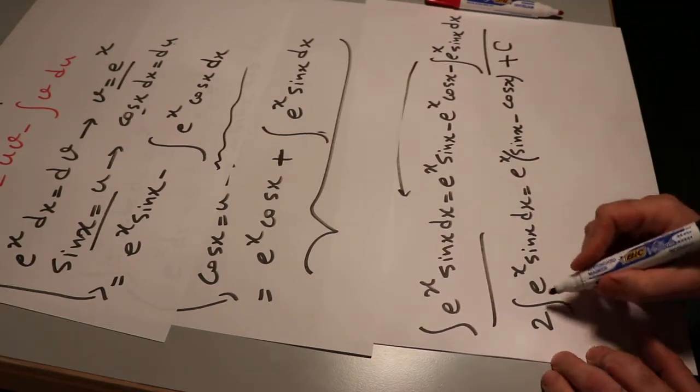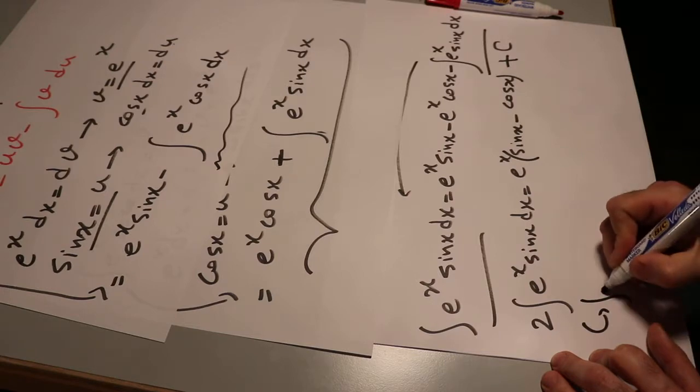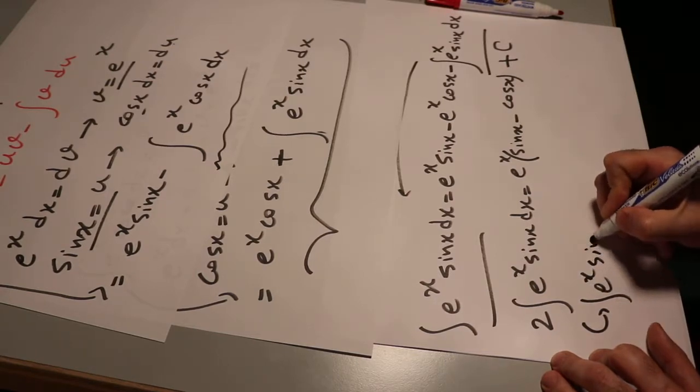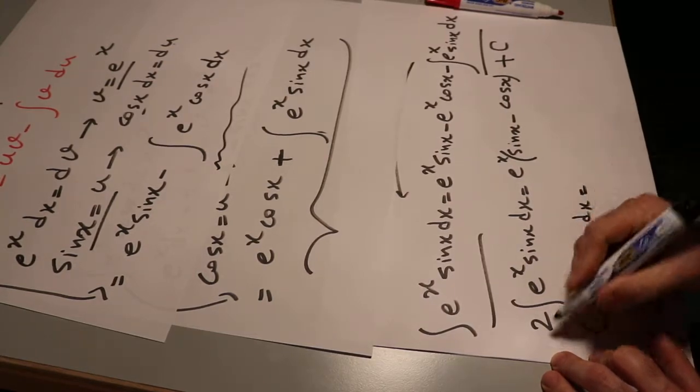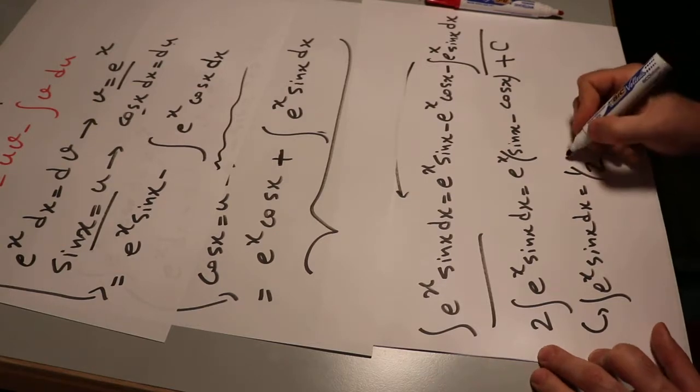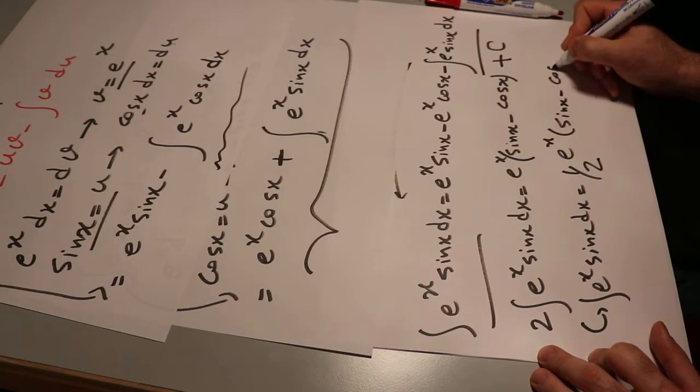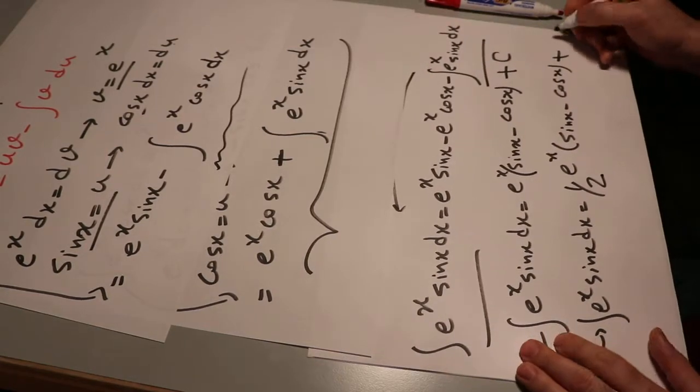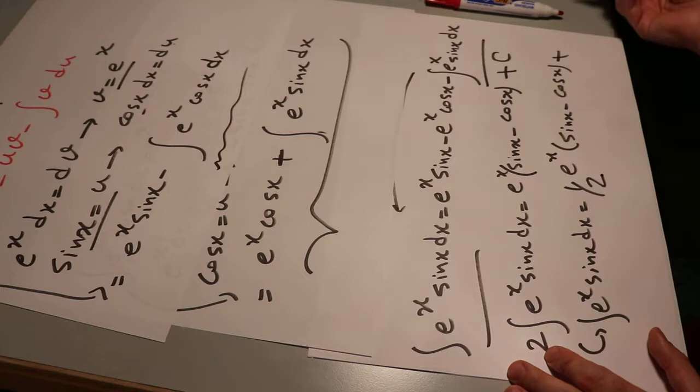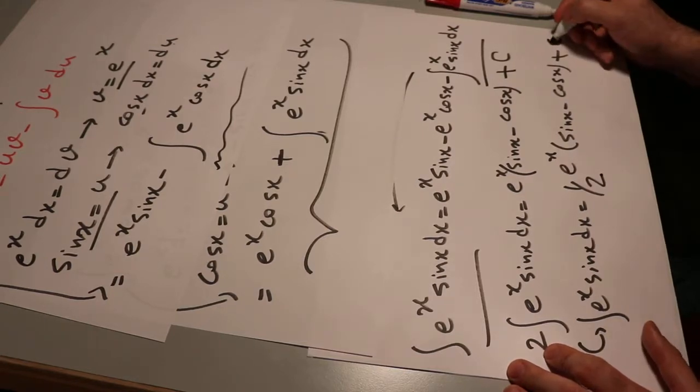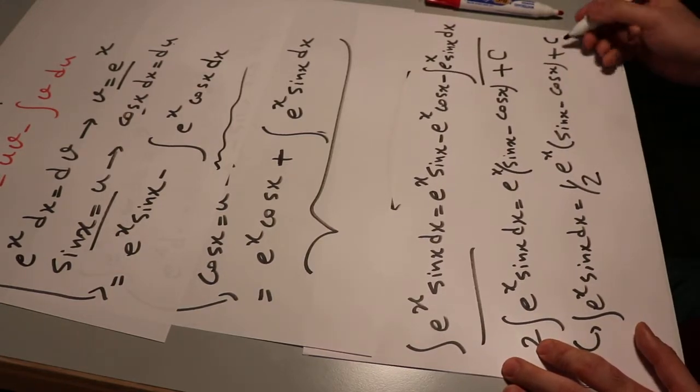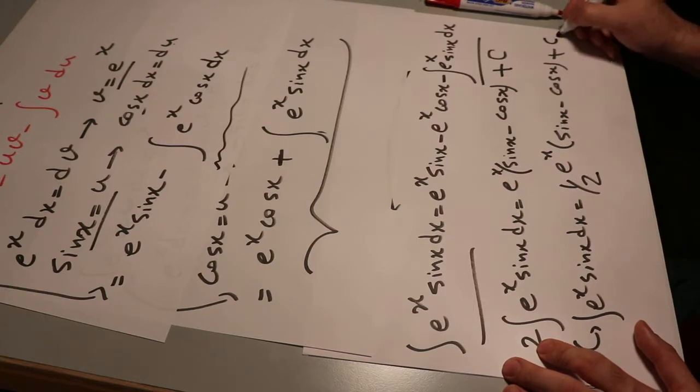So therefore, here, this integral of e^x sin x dx will be equal to 1 divided by 2 times e^x times (sin x minus cos x) plus the constant of the integral. So if you divide C by 2, it is another constant. So you can still show it by C or C1.